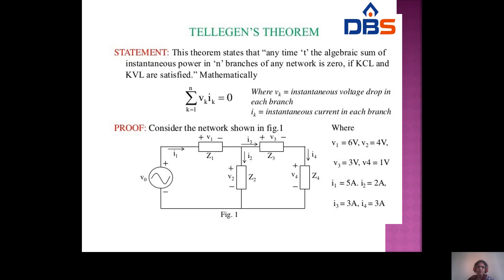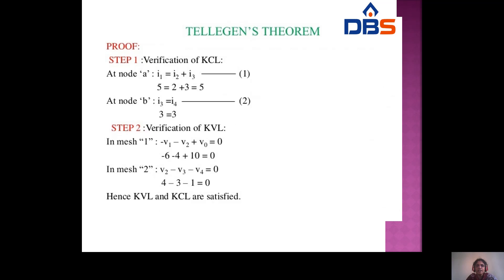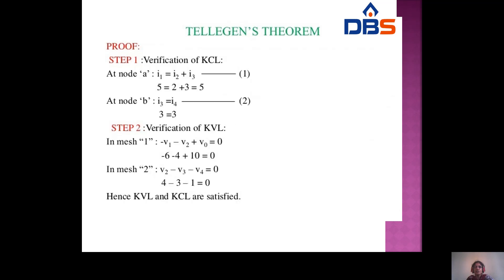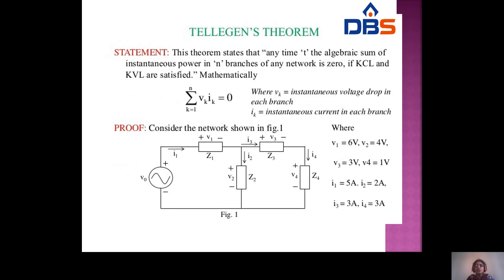For a verification example with given values V1 = 6 V, V2 = 4 V, V3 = 3 V, V4 = 1 V and I1 = 5 A, I2 = 2 A, I3 = 3 A, I4 = 3 A: first verify KCL — at node A: I1 = I2 + I3 = 2 + 3 = 5 ✓; at node B: I3 = I4 = 3 ✓.